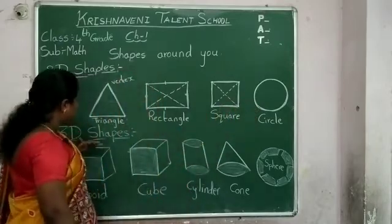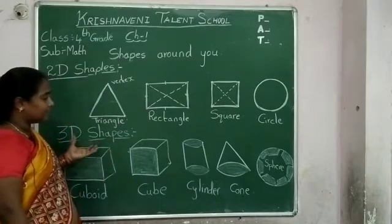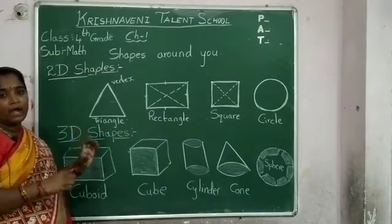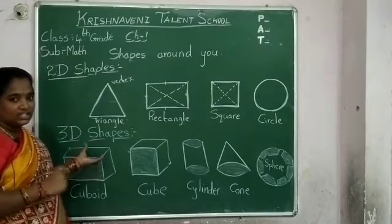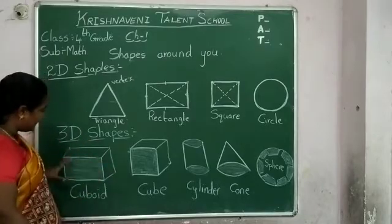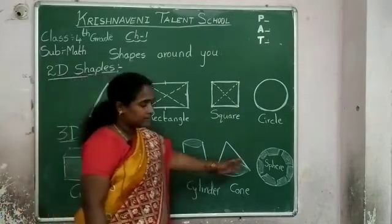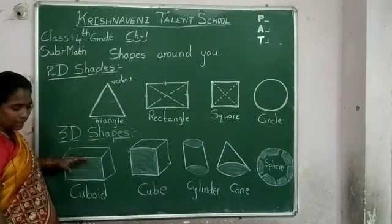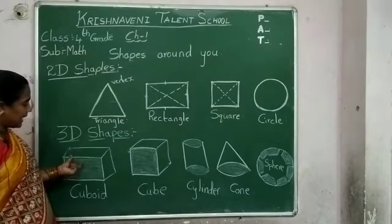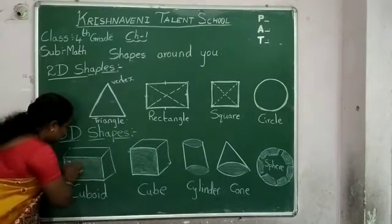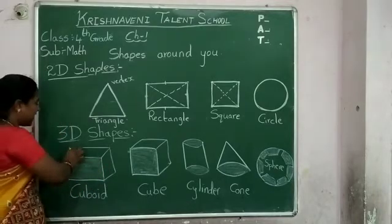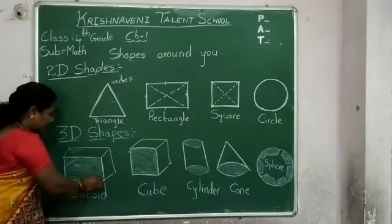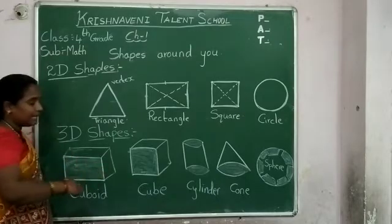Next, another topic is 3D shapes. Which are called 3D? Objects which have length, breadth, and height are called 3D shapes. Here I give some examples: cuboid, cylinder, and sphere. Cuboid has rectangular faces — it has six rectangular faces. Faces means surface; a smooth surface is called a face. So it has six rectangular faces. Edge means the side of a face — it is called an edge. It has twelve edges.